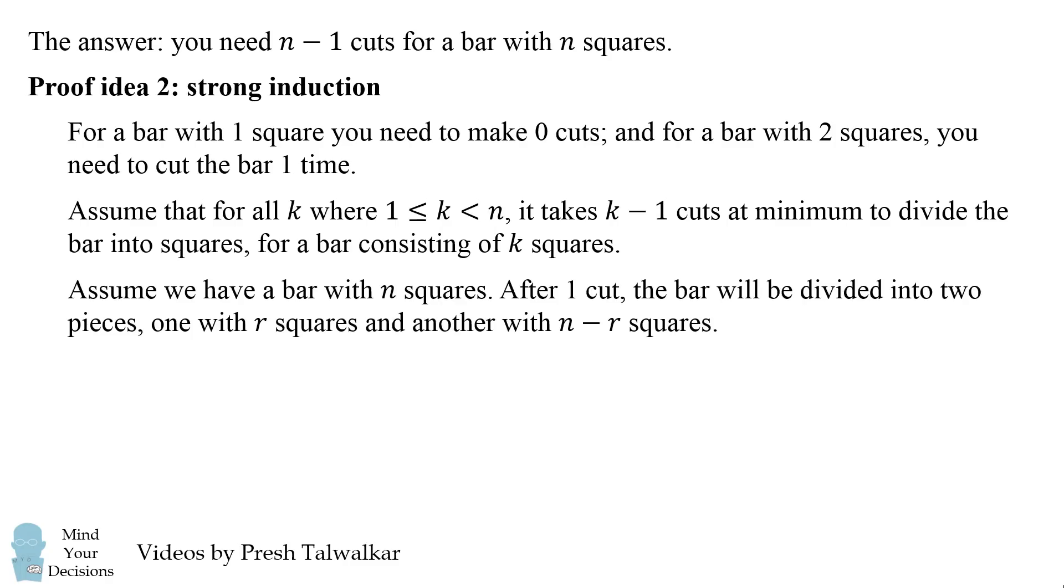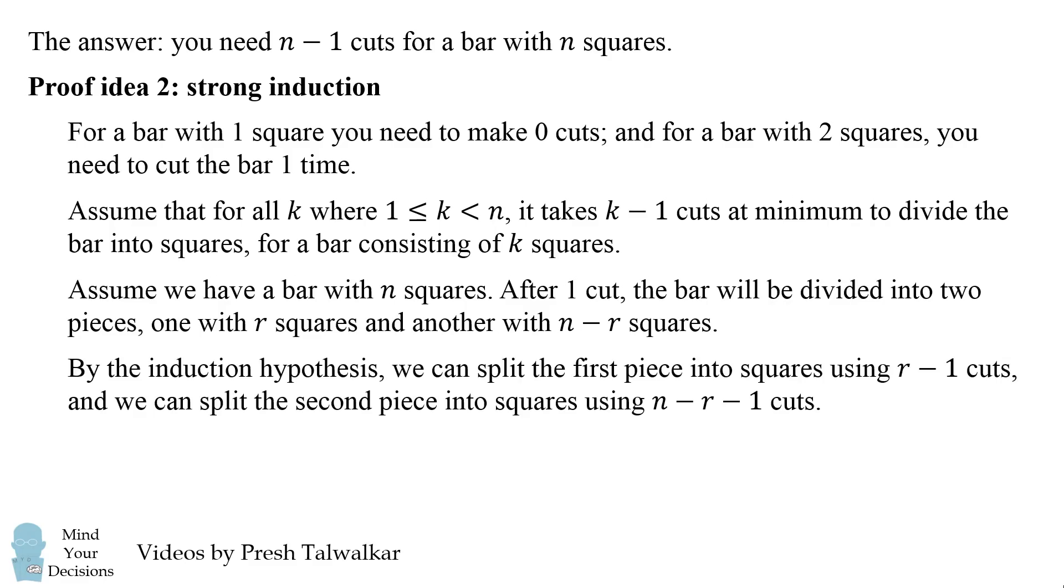Now assume we have a bar with n squares. After one cut the bar will be divided into two pieces: one with r squares and another with n minus r squares. Since r and n minus r are less than n, by the induction hypothesis we can split the first piece into squares using r minus 1 cuts, and we can split the second piece into squares using n minus r minus 1 cuts.